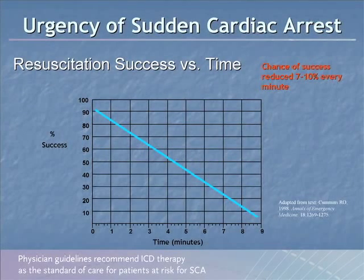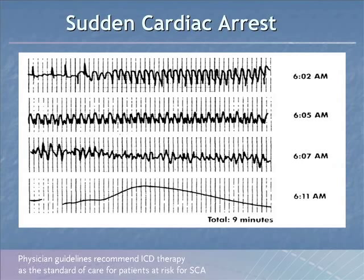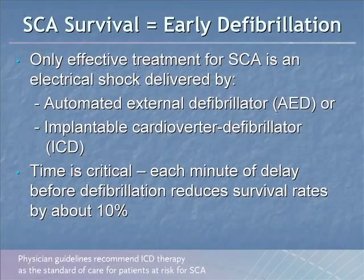How do we survive sudden cardiac arrest? It depends on how quickly we have access to defibrillators. Ninety percent survival if resuscitated in less than a minute; out at eight or nine minutes, survival drops below 10%. For every minute that goes by, the chance of successful resuscitation drops about 7–10%. The only effective treatment for sudden cardiac arrest is an electrical shock, delivered by either an external defibrillator or an implanted defibrillator — time is absolutely critical.